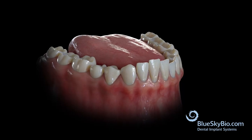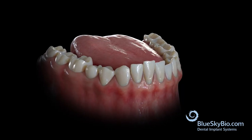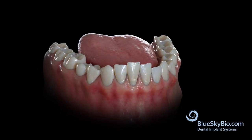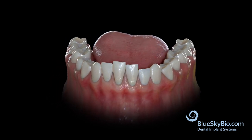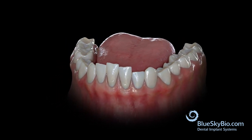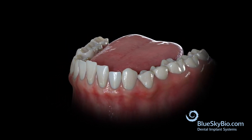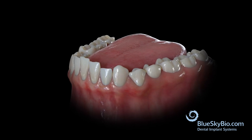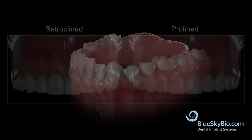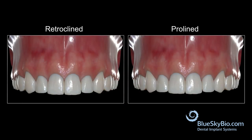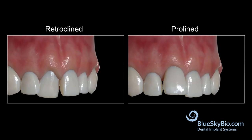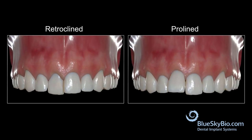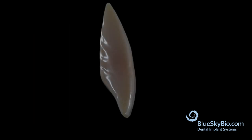The incisal gingival position of each tooth must be evaluated when determining an orthodontic treatment plan. In previous videos, we've discussed various approaches to correcting some of these discrepancies. However, teeth that are significantly retroclined or proclined can give the false impression that they are either super erupted or under erupted.